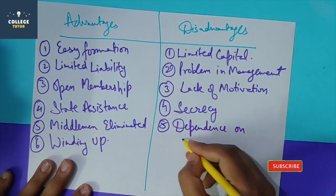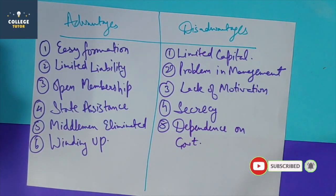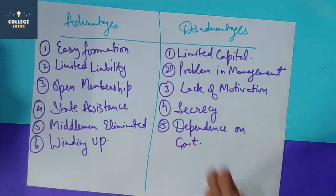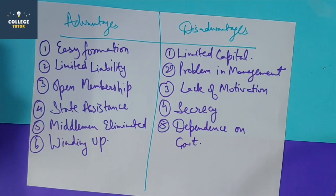Another disadvantage is dependence on government. In cooperative society, because funds and capital are limited, for many things I have to depend on the government, which is not ideal. So to summarize, cooperative societies are a voluntary association with a motive of welfare for members. We have seen the features, types, advantages, and disadvantages of cooperative societies.